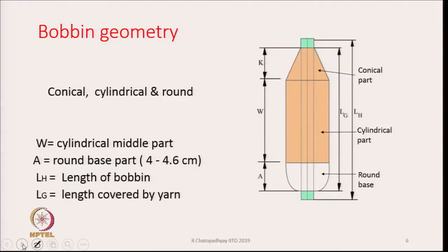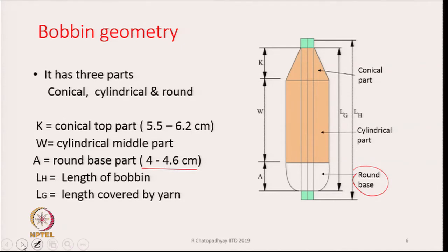The geometrical form of the bobbin includes a round base, a conical part, and a cylindrical part. The round base is typically 4 to 4.6 centimeters in length, labeled A. The conical part, labeled K, is typically 5.5 to 6.2 centimeters in length. These are the standard dimensions.